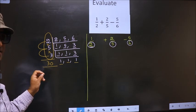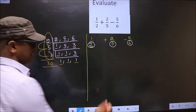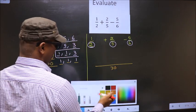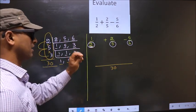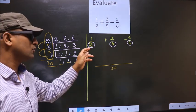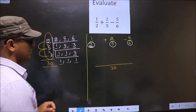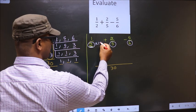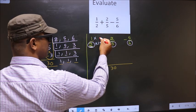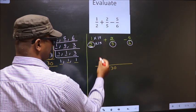Once we got the LCM, we write the expression with the common denominator of 30. Here we have 2 in the denominator, and now 2 should change to 30. For that to happen, we should multiply by 15. Whatever number we are multiplying in the denominator, in the numerator also we should multiply by the same number. So we get 1 into 15, which is 15.